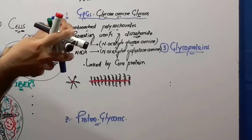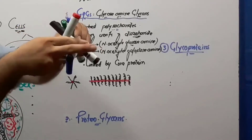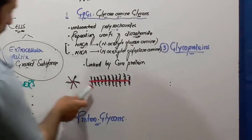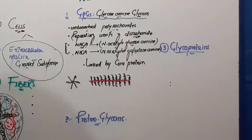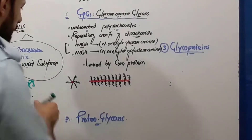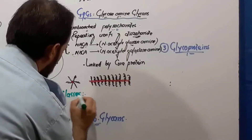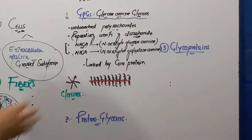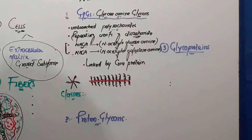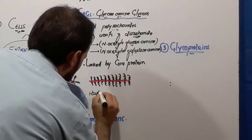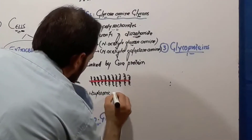There will be a central core protein and then there are the attachments of these disaccharides to it. There are some classes of these glycosaminoglycans. The first one is hyaluronic acid.